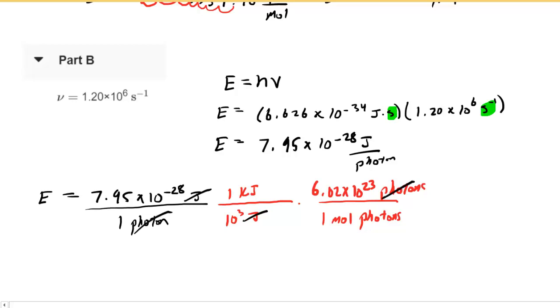The way that we've situated the units allows us to cancel joules and photons, leaving us with kilojoules per mole of photons. When we punch this into our calculators, we get 4.79 times 10 to the minus 7 kilojoules per mole of photons. That would be the correct answer to part B.